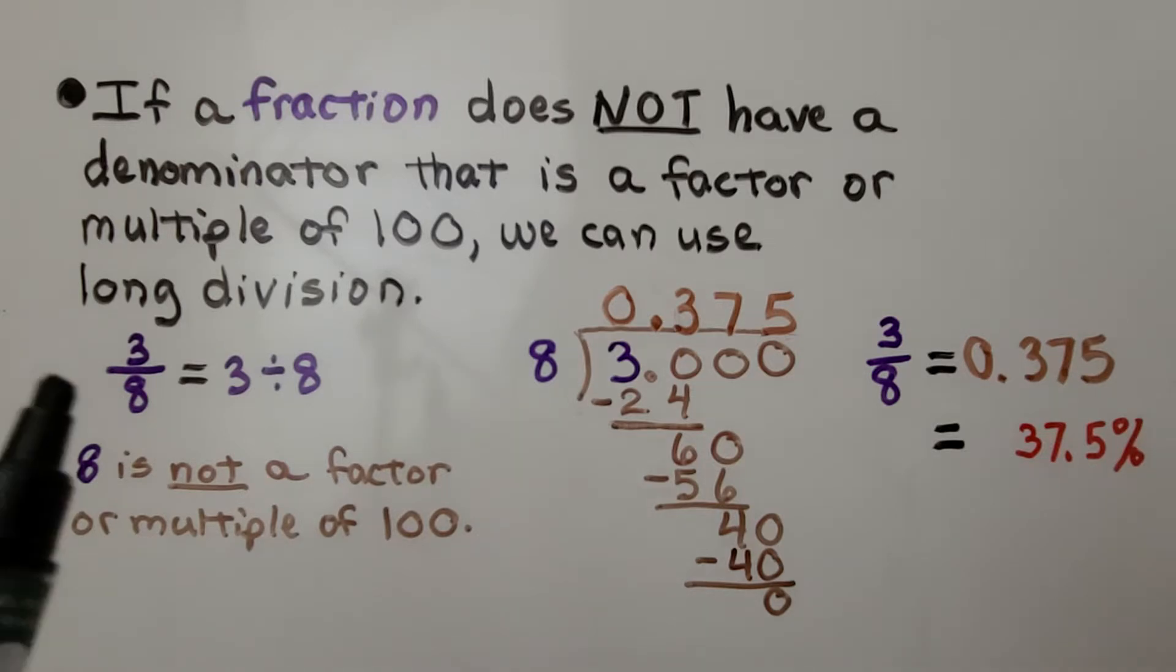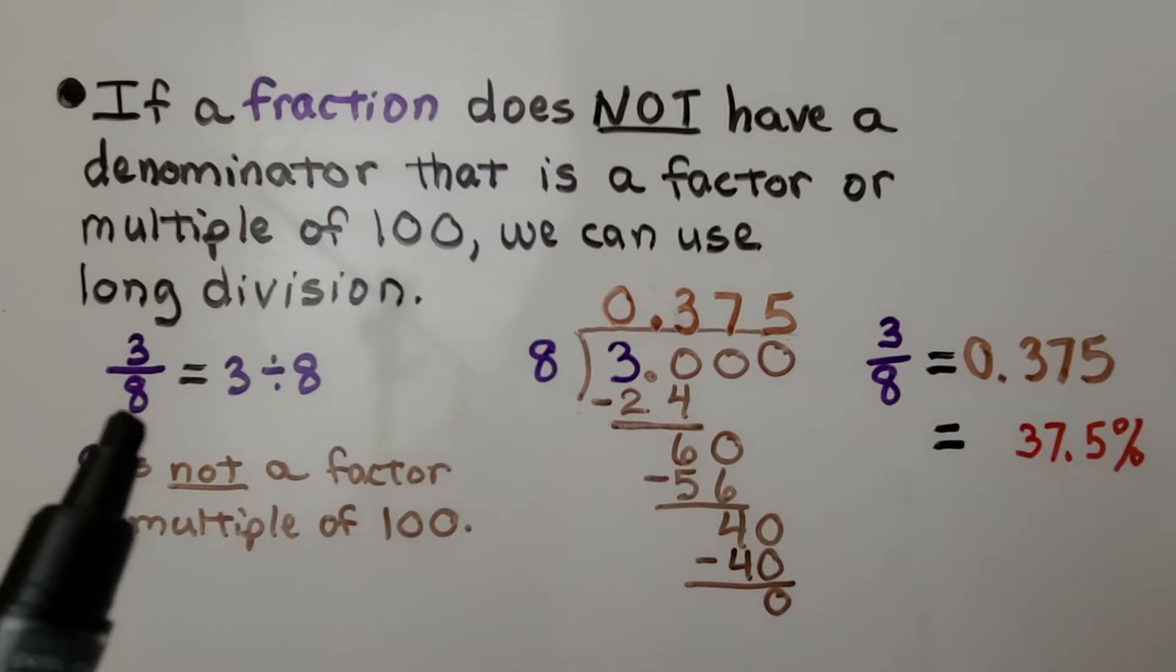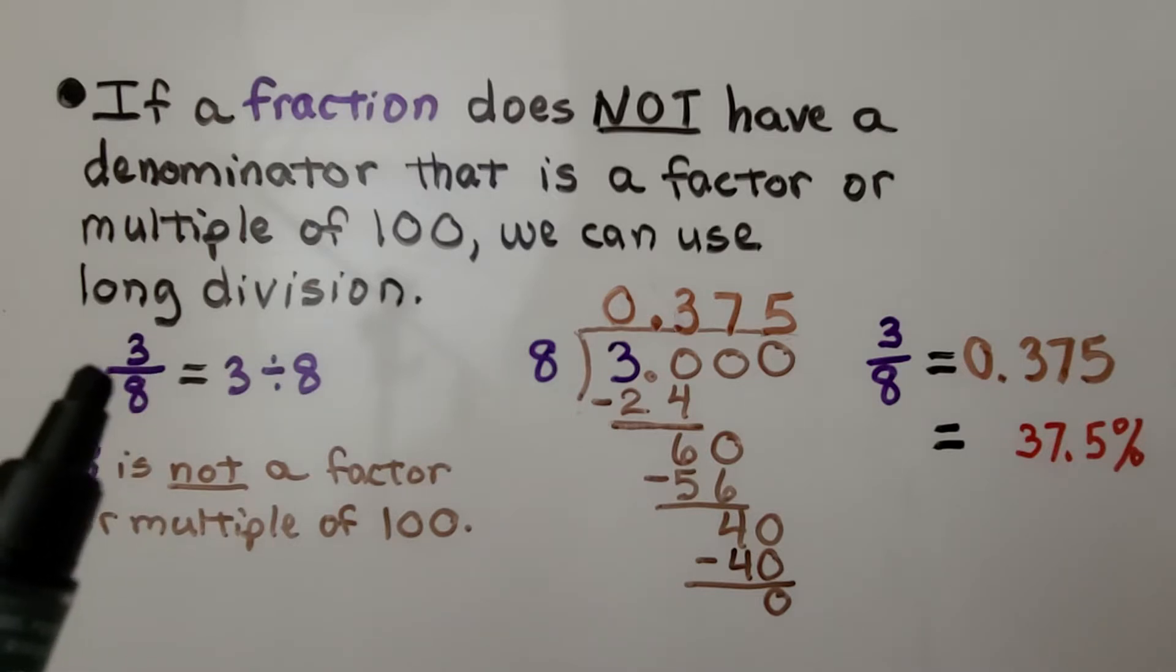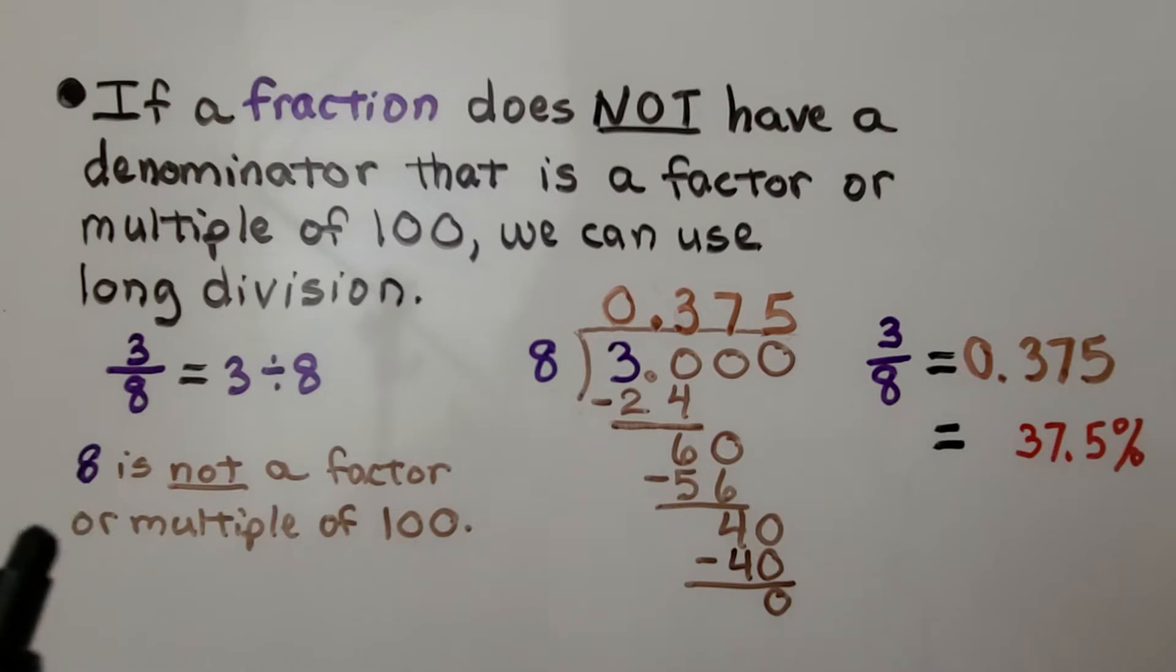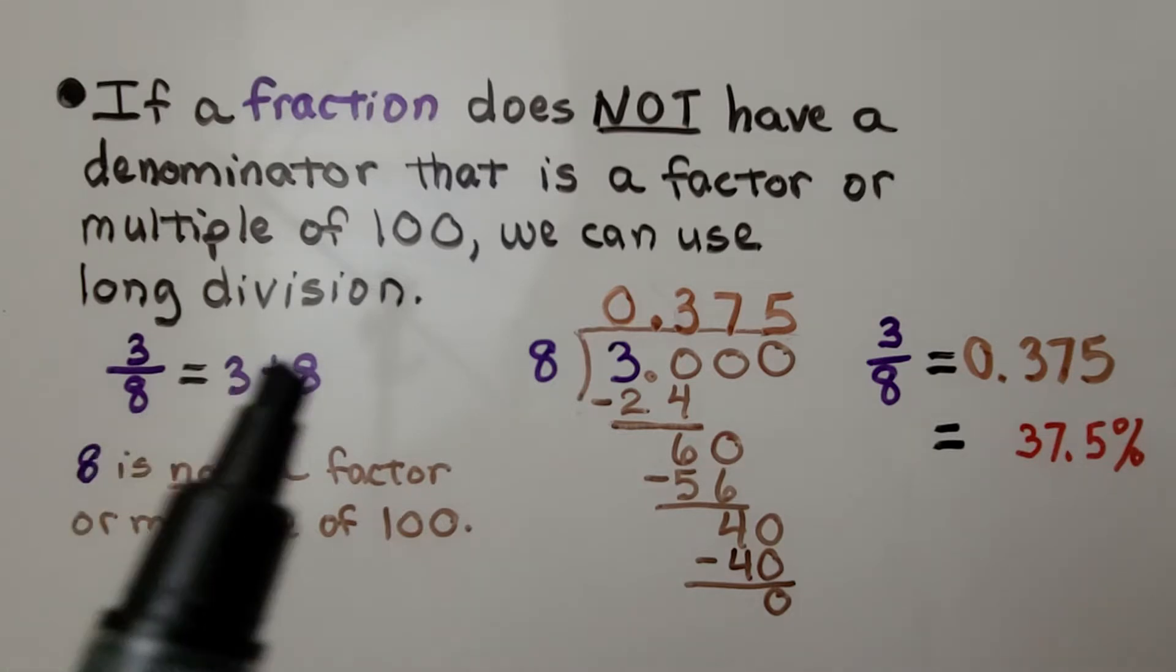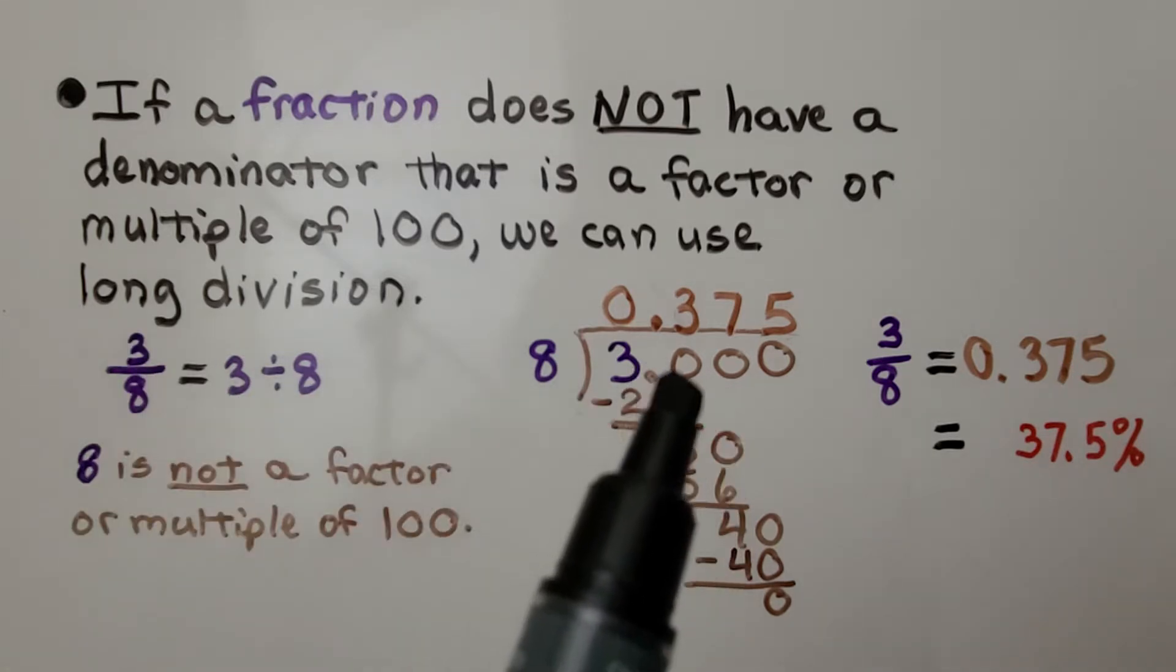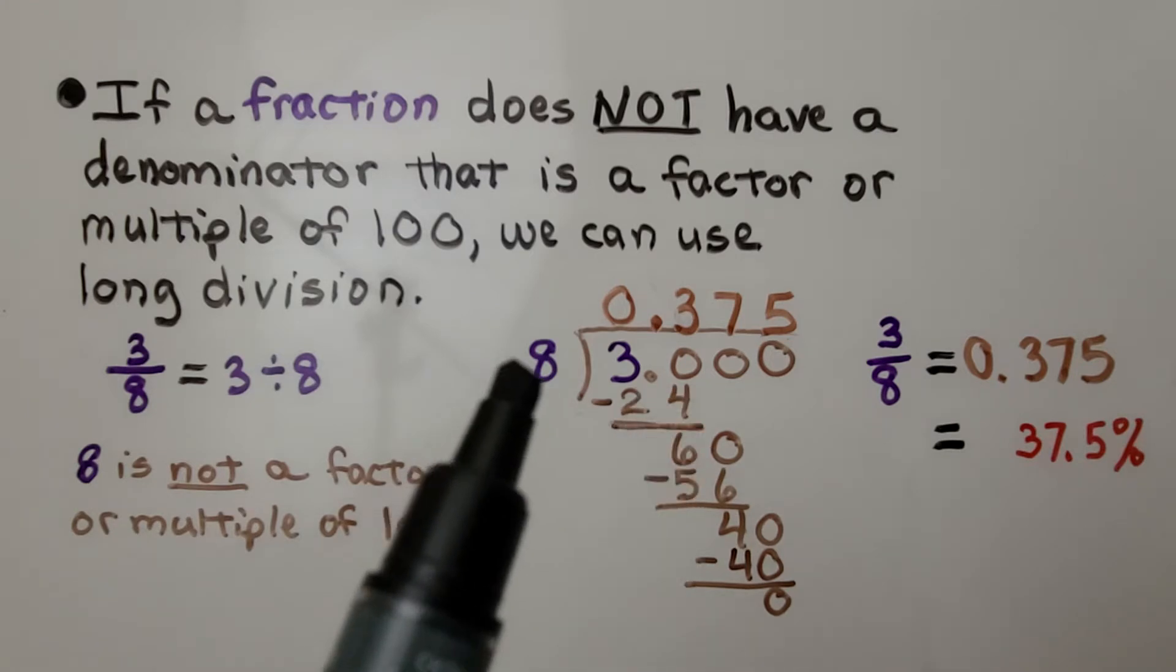We have 3 eighths, so this is 3 divided by 8. We think of the fraction bar as divided by. And 8, the denominator, is not a factor or multiple of 100. So to write this as a decimal or a percent, we need to use long division. The numerator goes inside the division house, and the denominator is going to be on the outside as the divisor.